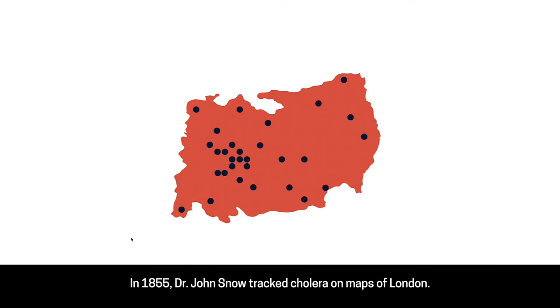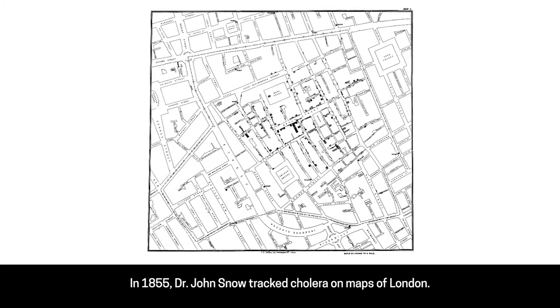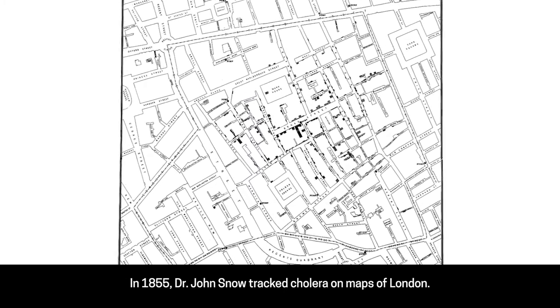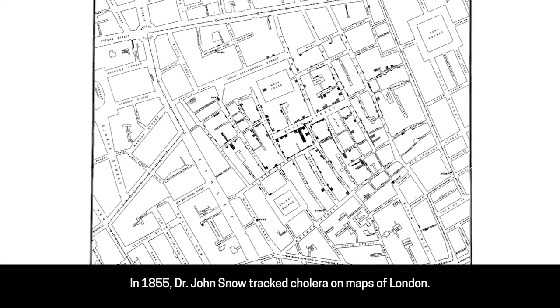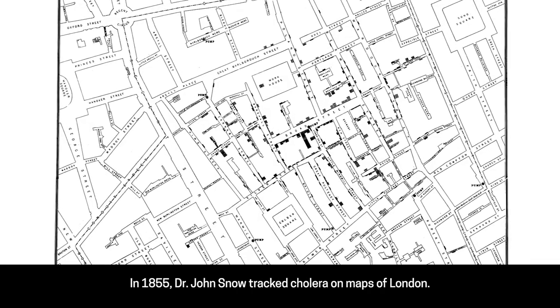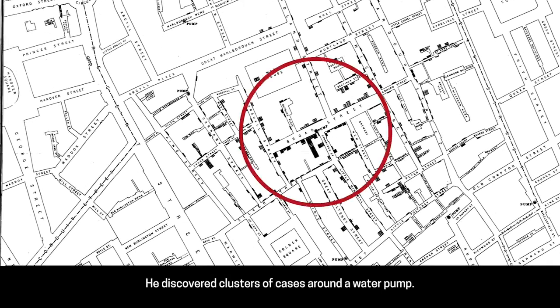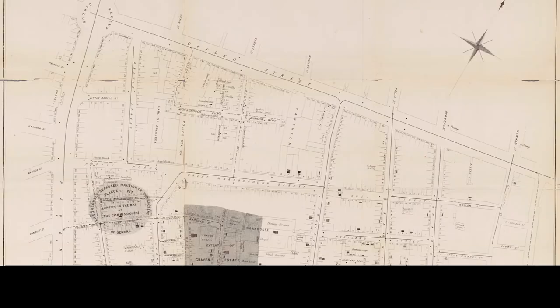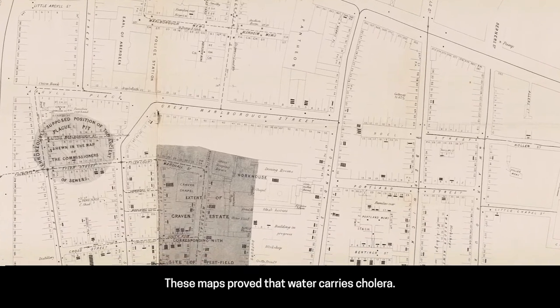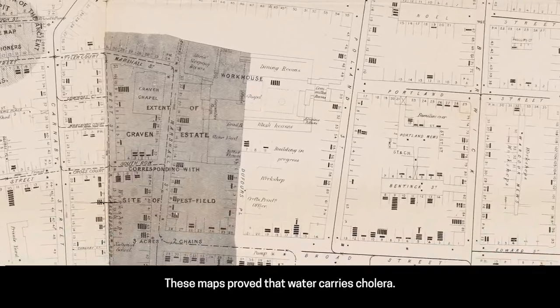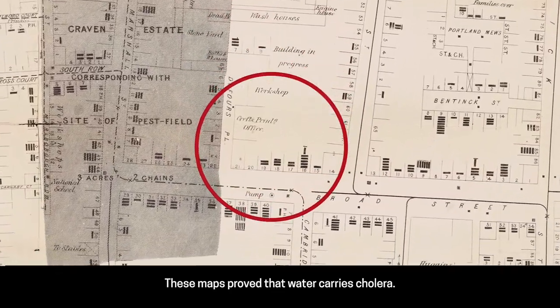In 1855, Dr. John Snow tracked cholera on maps of London. He discovered clusters of cases around a water pump. These maps proved that water carries cholera.